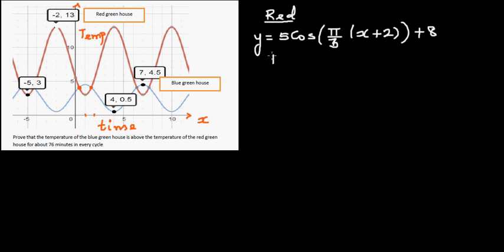For the blue graph, both graphs have a period of 6 hours. If you go from the minimum at hour 4 to the maximum at hour 7, half a cycle is 3 hours, so the full wavelength is 6 hours. The minimum is at 4 and the maximum is at 7, confirming the full period is 6 hours.